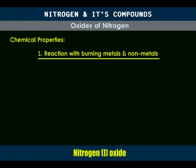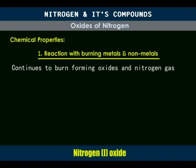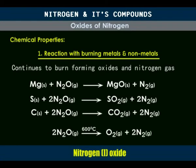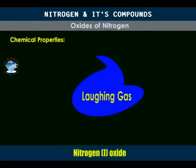Chemically, burning metals — for example, magnesium — and non-metals like sulfur and charcoal continue to burn in the gas, forming the corresponding oxide and nitrogen gas. Nitrogen-1 oxide itself does not support combustion; however, at a high temperature of about 600 degrees Celsius, it decomposes to oxygen and nitrogen, and it is the oxygen so formed that supports combustion. The reactions between burning elements and nitrogen-1 oxide are oxidation-reduction reactions, with nitrogen-1 oxide acting as the oxidizing agent. When inhaled, nitrogen-1 oxide has a mild anaesthetic effect.